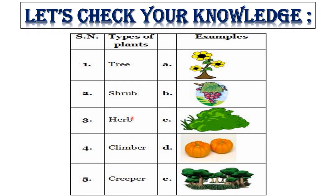Now let's check your knowledge. Types of plants and examples — can you match? Tree: can you match the example of a tree? Coming to the next, shrub: which picture identifies a shrub? Yes, flowers come under the category of shrub. Next, herb: grass is an example of herb. Climber: a climber needs support to grow upwards — grapevine is an example of a climber. Creeper: as we have seen, the pumpkin plant is a creeper which grows along the ground.